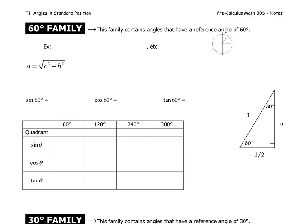For our next family, we're going to consider the 60-degree family. This family contains all the angles that have a reference angle of 60 degrees. Of course, the first one on that list is 60 degrees. Let's draw the angle in the second quadrant. Drawing an angle in the second quadrant that has a reference of 60 degrees — what angle could this be? 120 degrees is the answer. That's 180 minus 60.